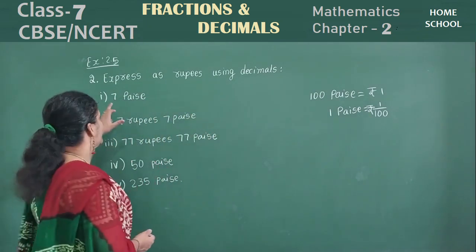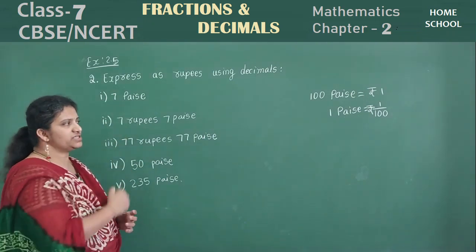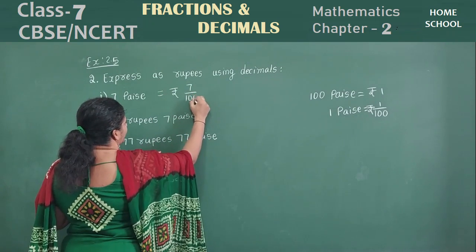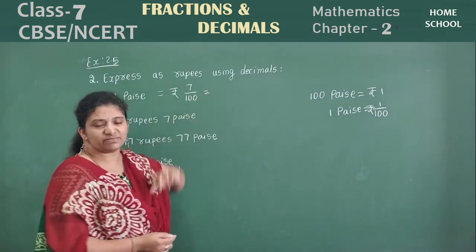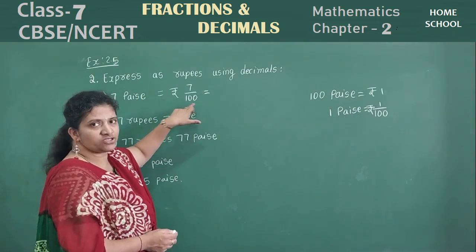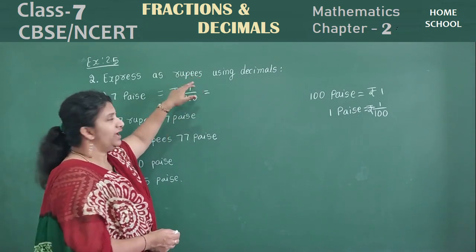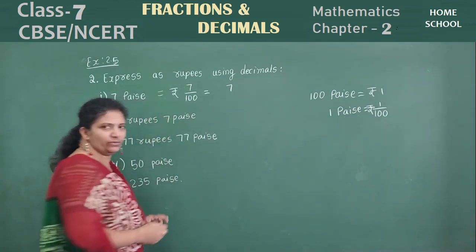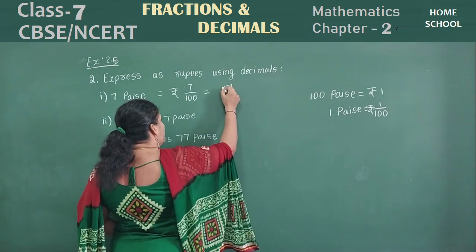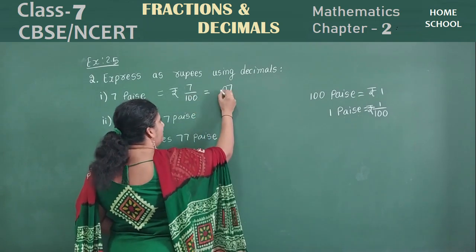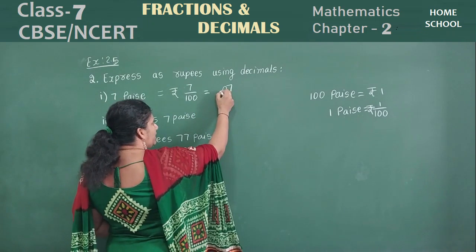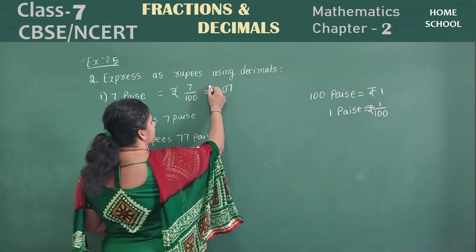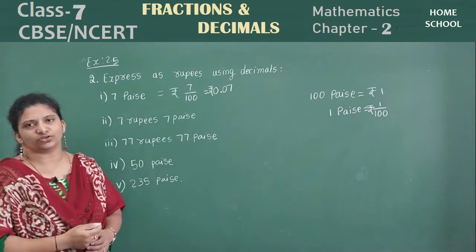Let's see that conversion. First one: seven paise. One paise is one by hundredth. Seven paise means seven by hundredth. Convert into decimal: denominator has two zeros. When you bring to the numerator, after two values you should put the decimal point. That means I only have a single value here, so from this side put one zero. After two values, keep a decimal point. That is 0.07 rupees.